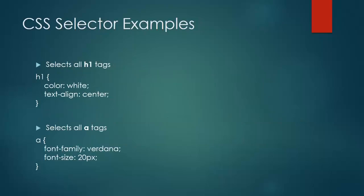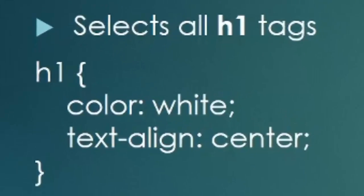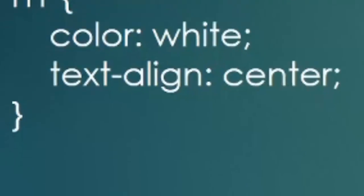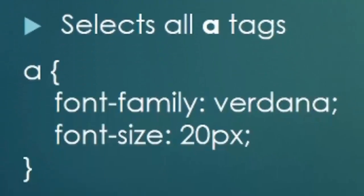So these are some examples of CSS selectors. The first example: H1 is the CSS selector, and it selects all H1 tags inside the HTML. The code written inside curly braces denotes the style — basically saying all elements with H1 tags will have color white and text-align center. Similarly for the second example, the CSS selector is A, selecting all anchor tags in the HTML, and applying a font family and font size style.